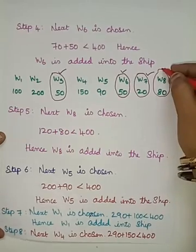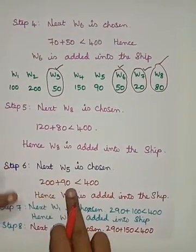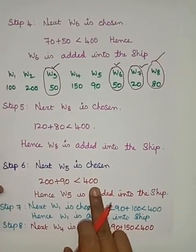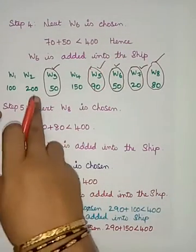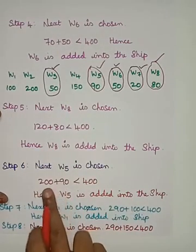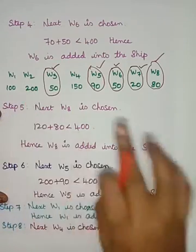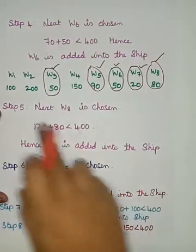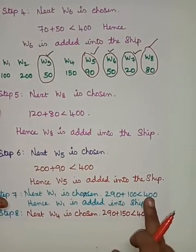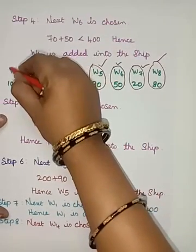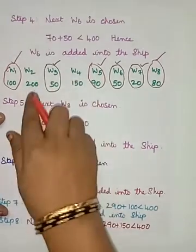Next, we go with w5 with weight 90: 200 plus 90 equals 290, which is less than 400, so w5 is loaded and ruled out. The remaining containers are w1=100, w2=200, and w4=150. Current weight is 290. Choosing w1: 290 plus 100 equals 390, which is less than 400, so w1 is selected and ruled out.